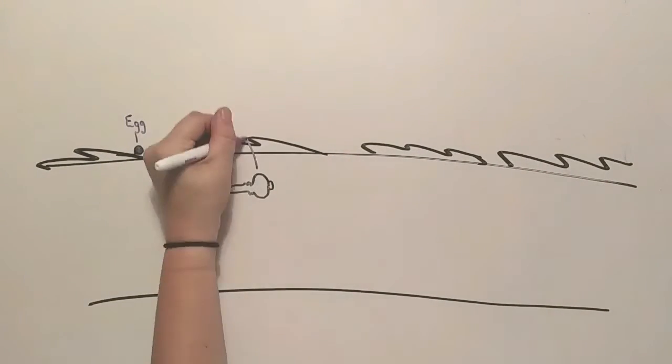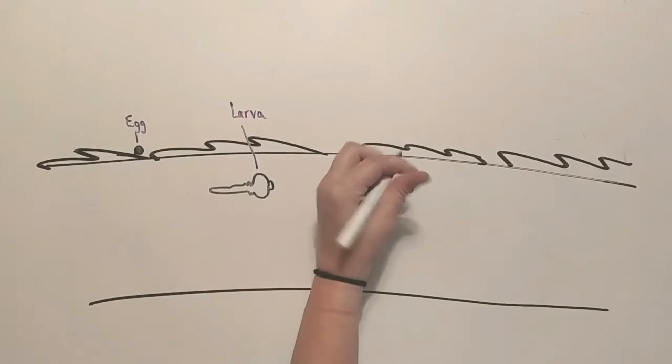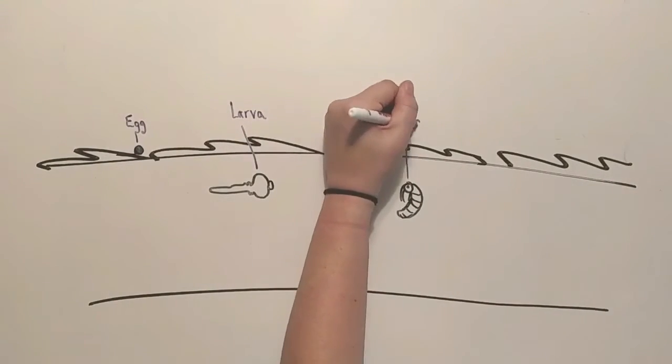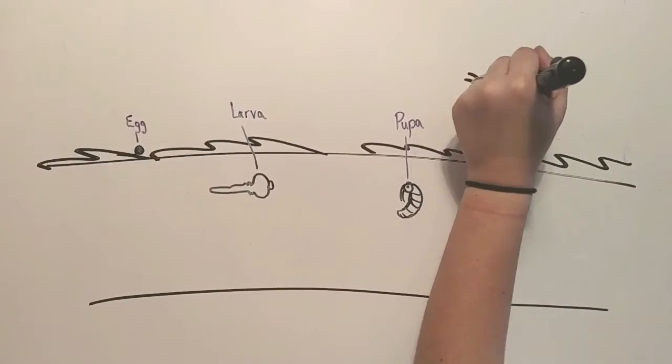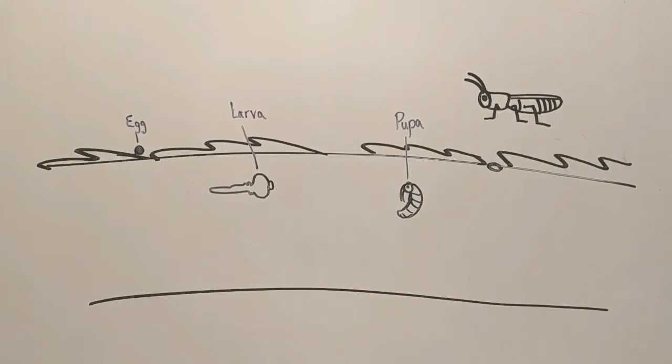If the larvae was to chew into a living tree, they wouldn't survive very long, as the tree would still have all of its defensive mechanisms. Since the fire has killed the tree, the beetle larvae has no problems feeding on the wood. They will pupate and emerge as adults the following summer.